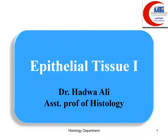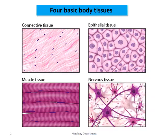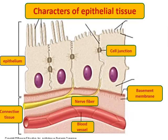This is the first lecture about epithelial tissue. In our body we have four different types of basic tissue: connective tissue, epithelial tissue, nervous tissue, and muscular tissue.